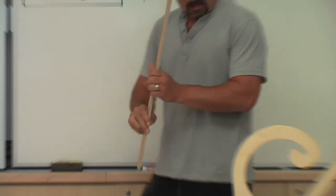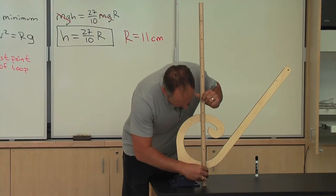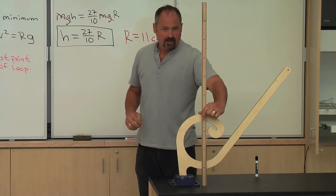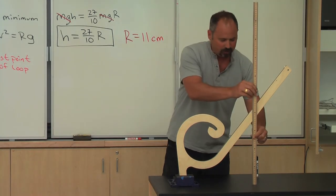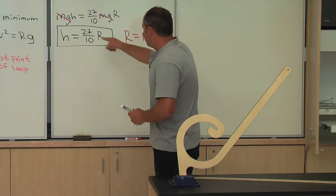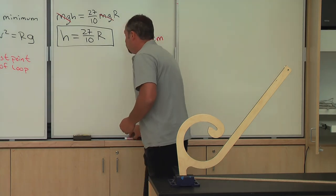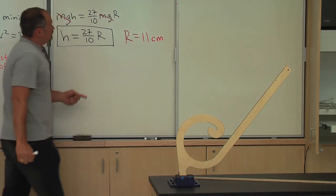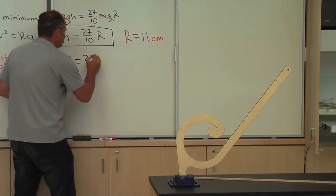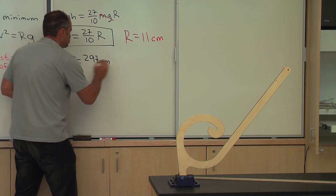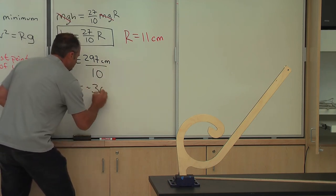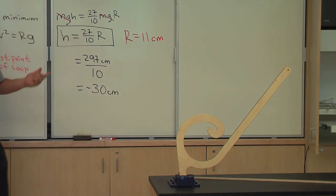The loop is 22 cm diameter, so that's a radius of 11 centimeters. And then the loop's lowest point starts at 14 centimeters from the ground, so I'll add 14 centimeters to whatever height I get in order to know where to place the ball. If I plug 11 centimeters in here, 27 times 11, that's 297. So, I get 297 centimeters divided by 10, let's just call it 30 centimeters.